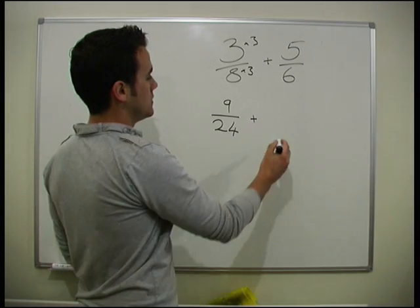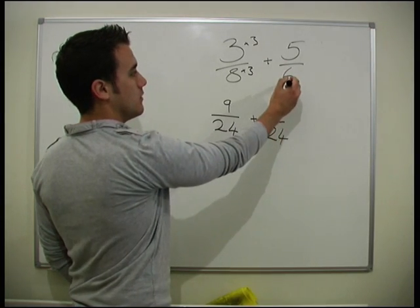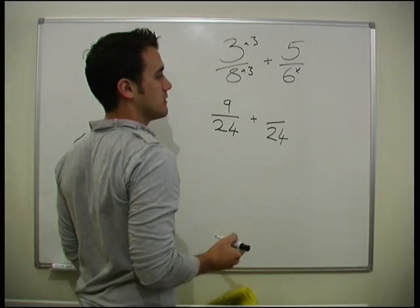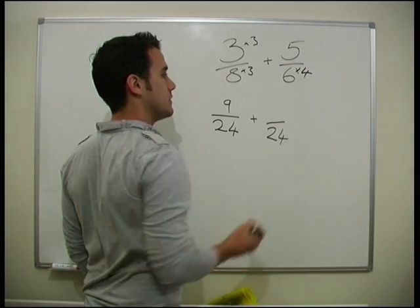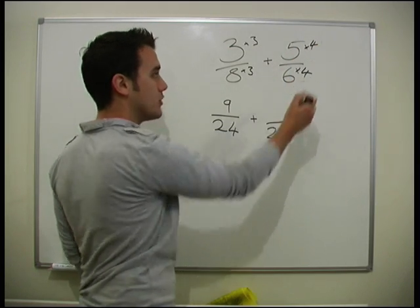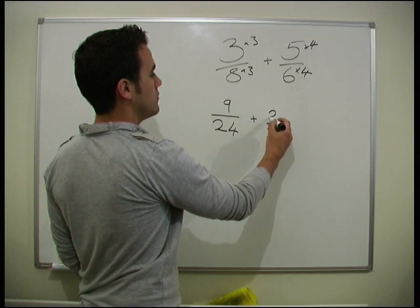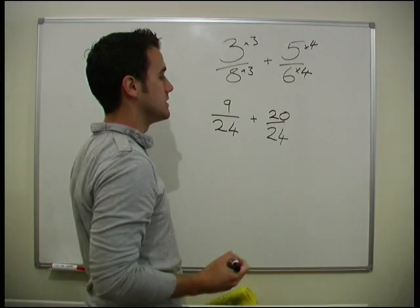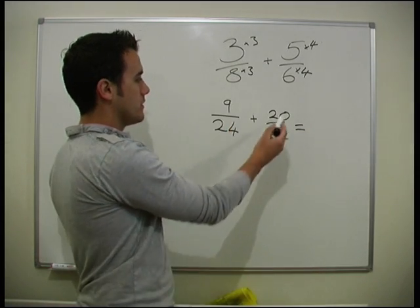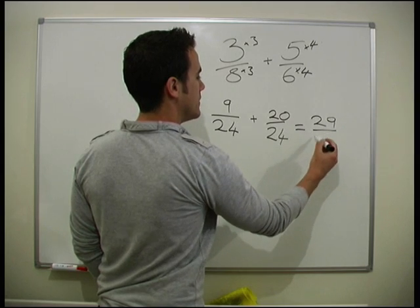And then we add that on to, what do we do here to get to 24? We times 6 by 4 to get to 24. So we're actually going to get 5 times by 4 again. Remember, we've got to do the same to the top and bottom, and we get that 5 times 4 equals 20. So we then need to add these two together. 9 plus 20 gives us 29 over 24.